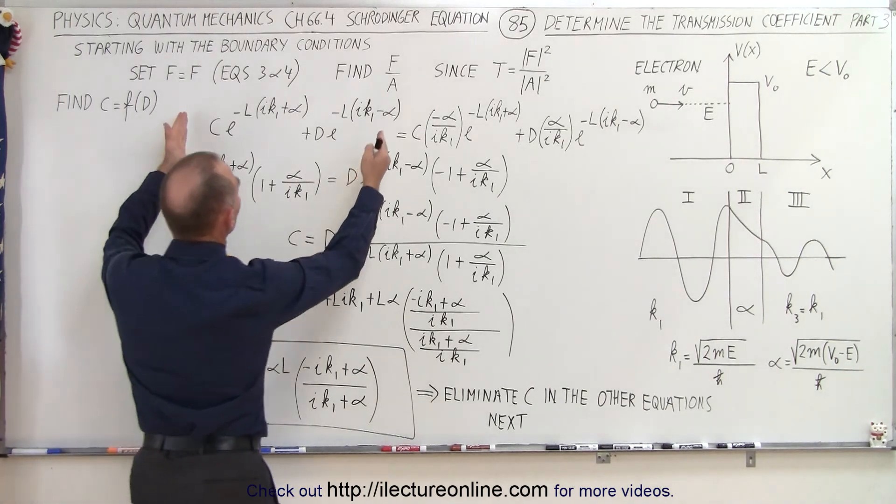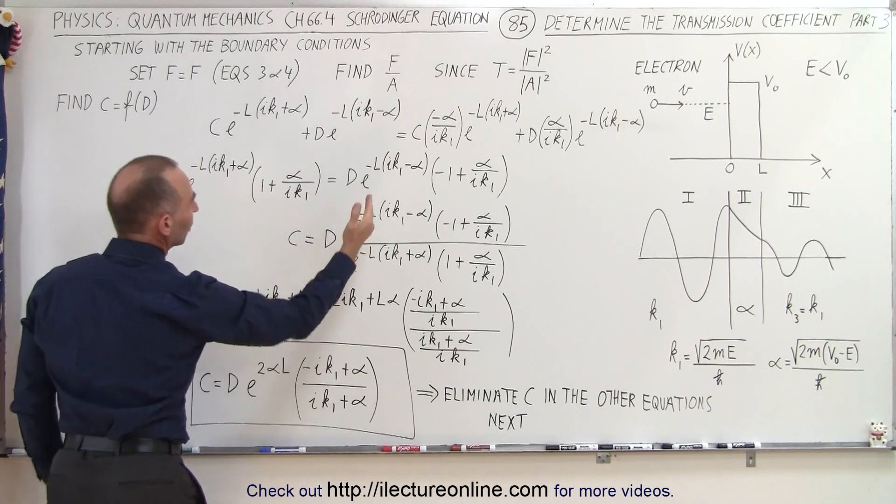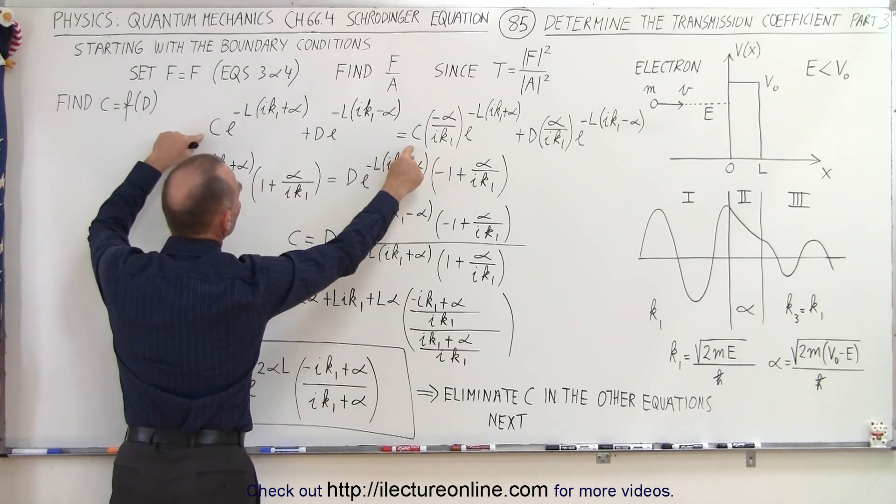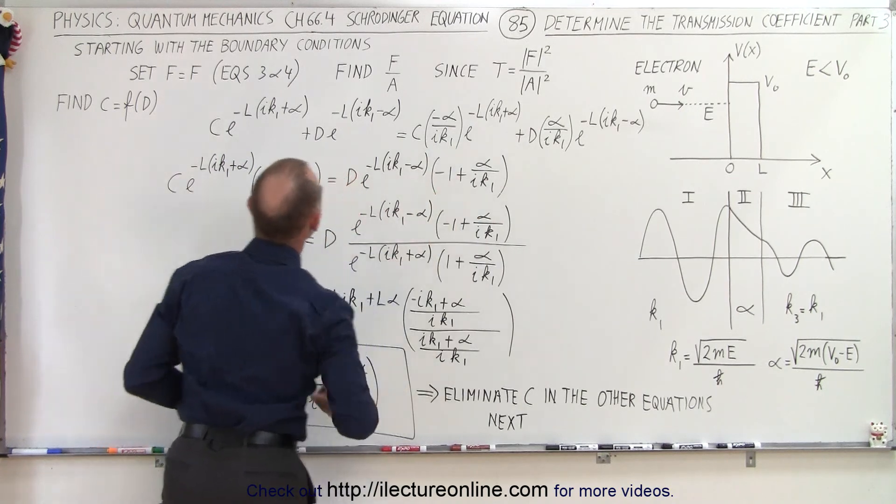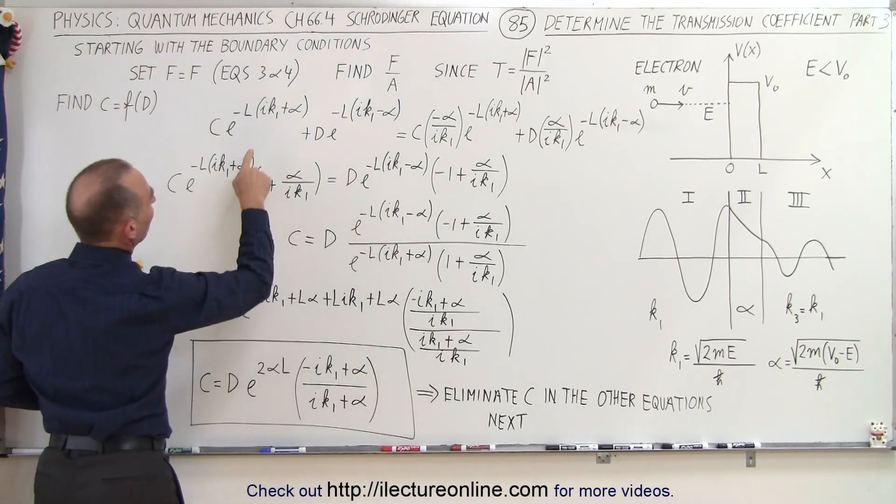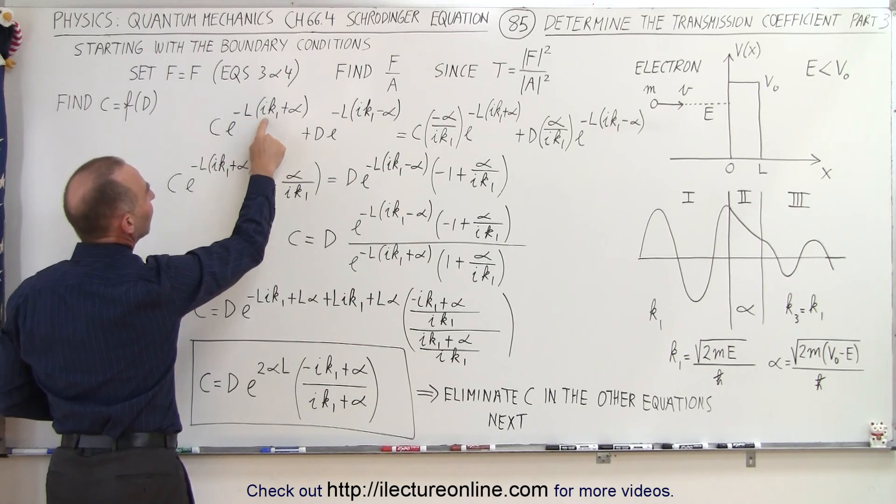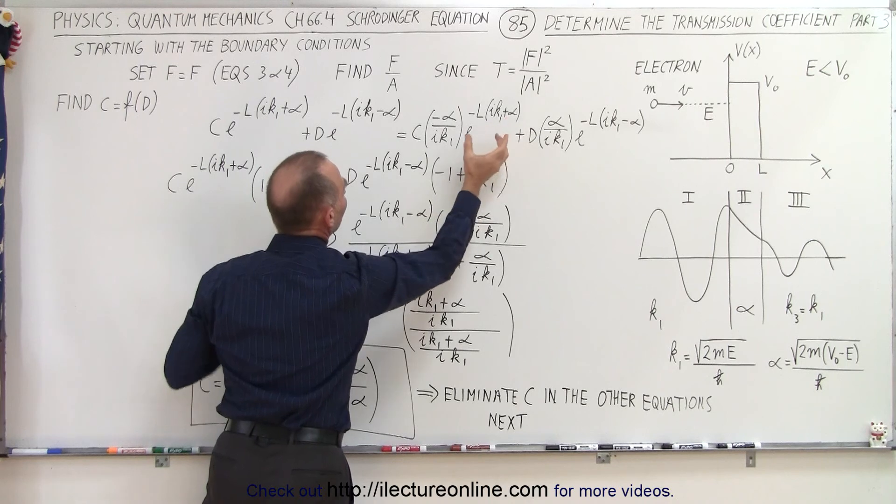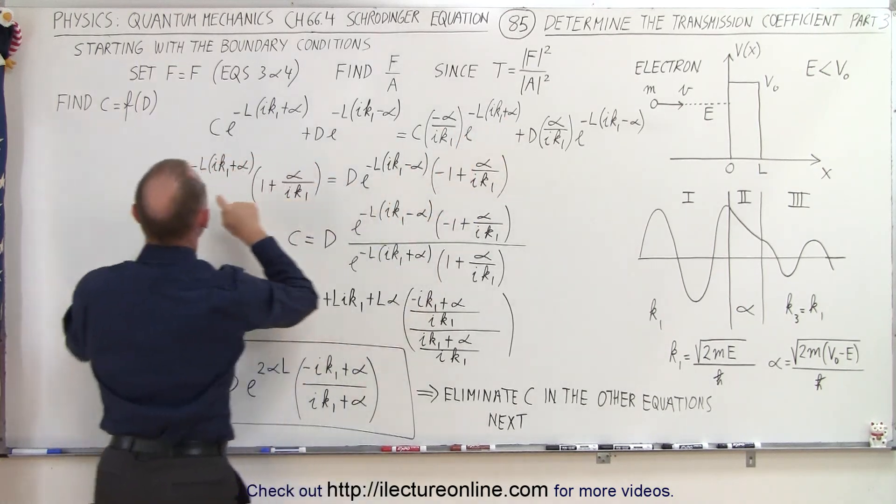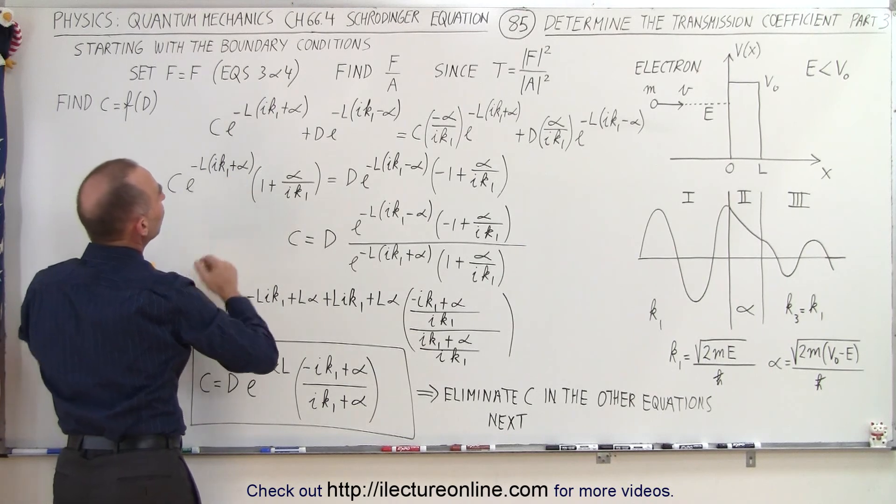So here we set the first equation of F equal to the second equation of F. When we do that, we want to take all the terms that have a C in them and move to the left side, and all the terms with D move to the right side. When we do that, we realize that the exponent minus L times IK1 plus alpha is the same. So we can factor out the E to the minus L IK1 plus alpha.